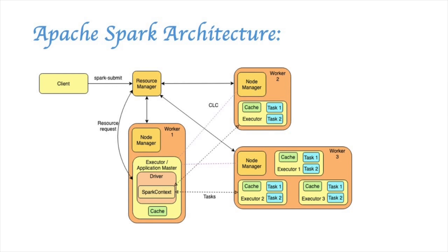Spark is well known for its speed and efficiency. Spark consists of a driver node which runs in the master node, and many executors which run on different worker nodes. There can be more than one executor in a worker node. For example, this worker node has one executor and this worker node has three executors.